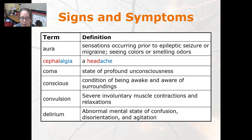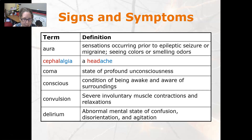An aura is a collection of sensations that occur prior to an epileptic seizure or to a migraine. You can see colors or smell weird odors. Cephalalgia is a headache.